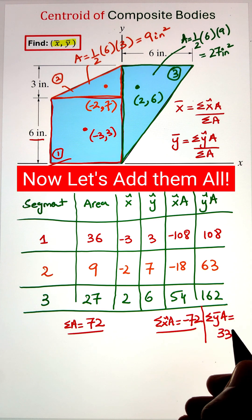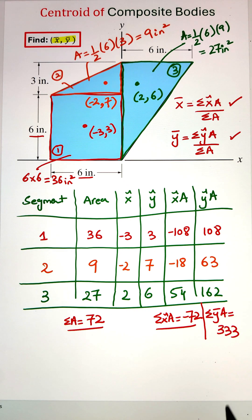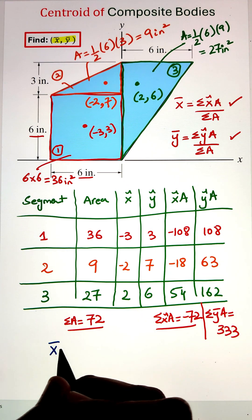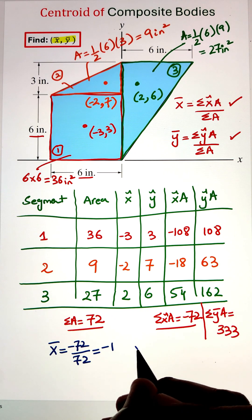Once we have those additions, let's plug them back into the formula and calculate our x̄ and ȳ values. Plugging them in, we are getting an x̄ value of -1 and the value of ȳ is 4.62 inches.